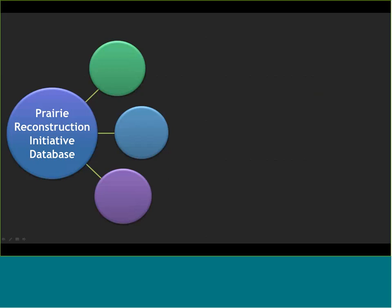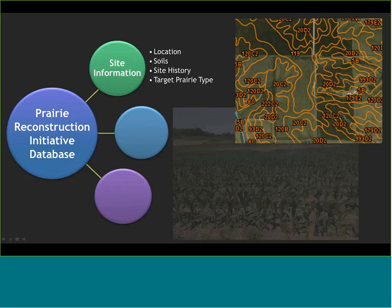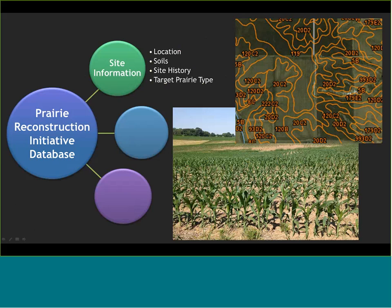The Prairie Reconstruction Initiative advisory team identified a set of variables most likely to affect the quality of a prairie reconstruction, and designed the database to record those crucial pieces. The database captures three distinct phases. The first happens before you put a planter on the ground — this is site information. We ask for things such as location, types of soil present, and up to 10 years of site history, including whether it was cropped, the type of crop, whether it was grazed or hayed, and the herbicide history if known.